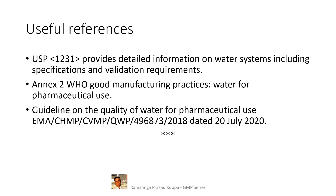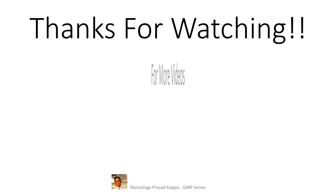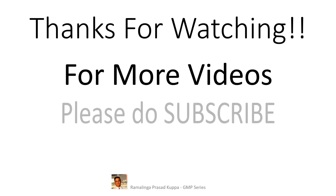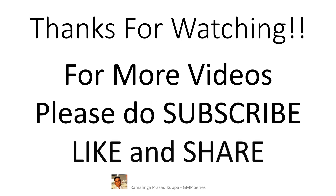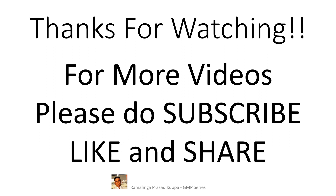I hope that the information in this video helps you to understand the basic requirements of water system validations. Read USP Chapter 1231 for more detailed information on establishing a good water generation and distribution system for pharmaceutical manufacturing. Thanks for watching — please do subscribe, like, and share. Thank you.